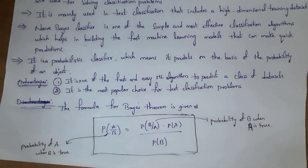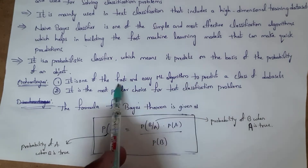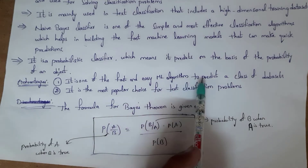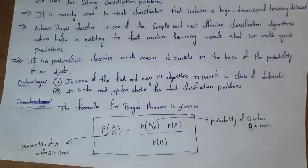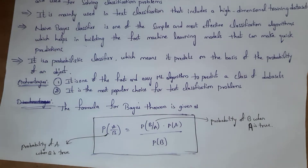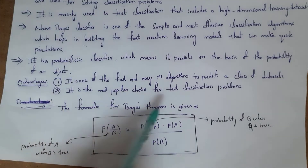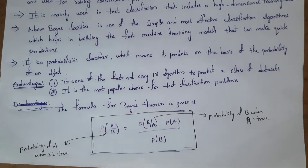These are the two advantages of the Naive Bayes classifier. First, it is a fast and easy machine learning algorithm to predict the class of a dataset — class meaning it can predict output easily. Second, if you want to solve text-based classification problems, then this algorithm is the best choice.